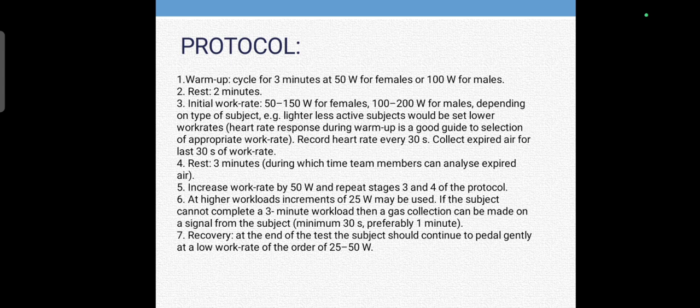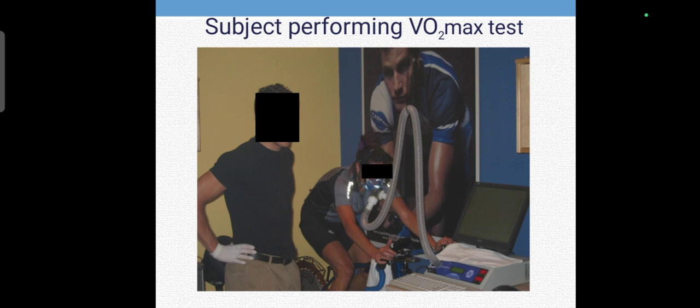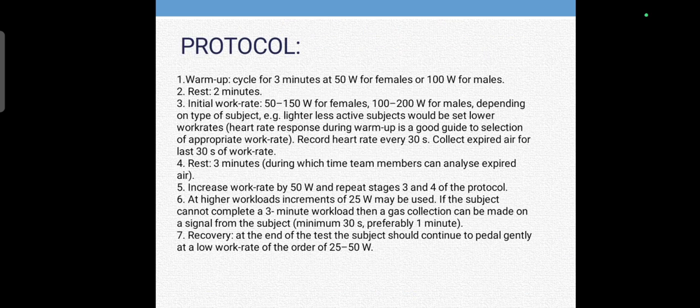Now you will record heart rate and any expired air collected after 30 seconds. You will record it on the computer screen. After that, you will rest for 3 minutes, then increase the work rate by 50 watts for stage 3 and stage 4. You can increase by 25 watts. Now if the subject cannot complete the full 3 minutes, whatever gas collection or reading you have used will be noted.